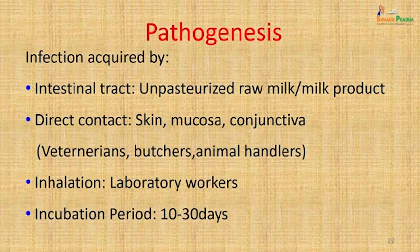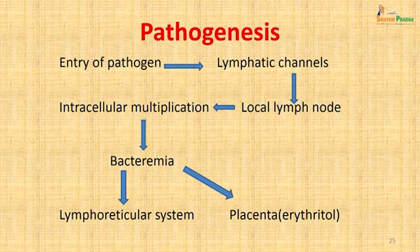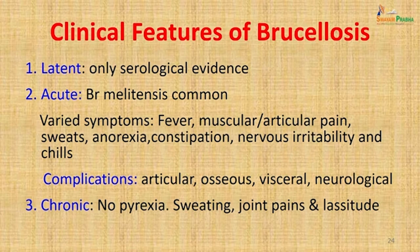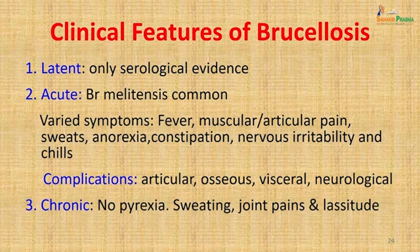The incubation period is roughly 10 to 30 days. The pathogenesis involves entry of the pathogen into the lymphatic channels, then to local lymph nodes with intracellular multiplication, followed by bacteremia, and then seeding of the lymphoreticular system and placenta. Clinical features can vary. Latent infection may have only serological evidence. Acute brucellosis, more commonly seen with Brucella melitensis, presents with fever, muscular or articular pain, sweats, anorexia, constipation, nervous irritability, and chills. Complications include articular, osseous, visceral, and neurological complications. In chronic brucellosis, surprisingly, there is no pyrexia — patients present with sweating, joint pains, and overall lassitude.